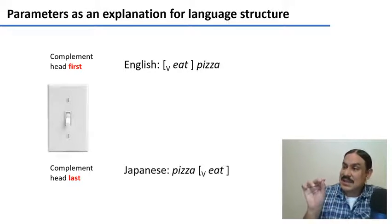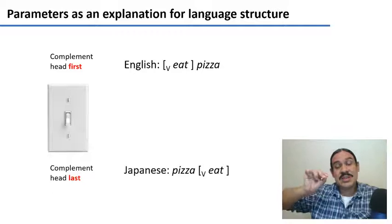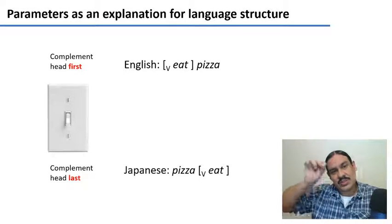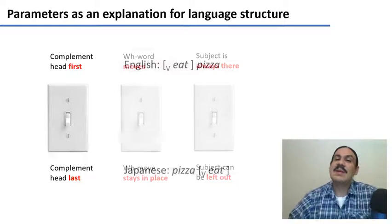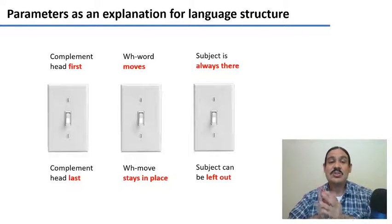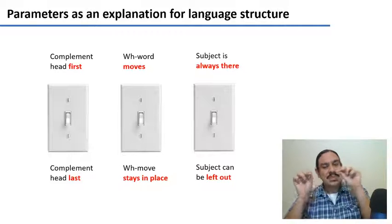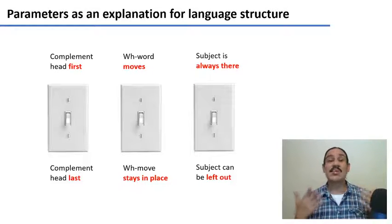So as you can see, you can flip the switch in one direction or the other to choose how to arrange the words in your language. We're going to call this a parameter. And there are many parameters that we could use to configure the shape of a language. We're going to study two very important ones here.